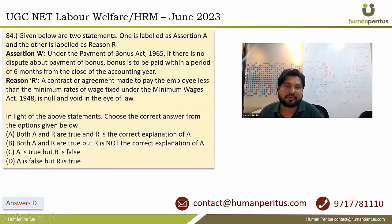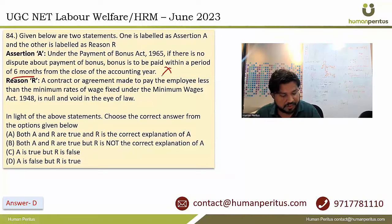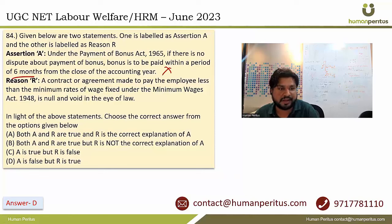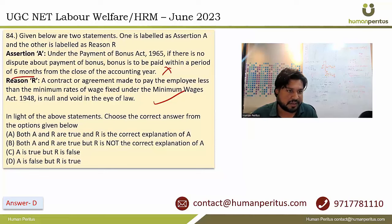The assertion states that under the Payment of Bonus Act, if there is no dispute about payment of bonus, bonus is to be paid within six months. This is wrong — it must be paid within eight months. Statement 2 says that any contract made to pay employees less than the minimum rate of wages fixed under the Act is null and void — this is absolutely correct, it was a court ruling. So the correct answer is A is false but B is true, which is option D.